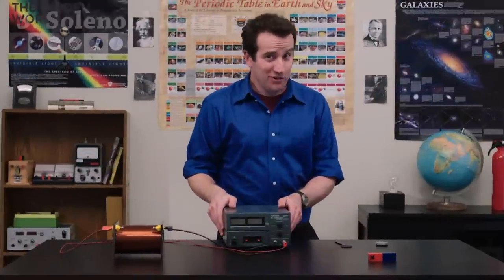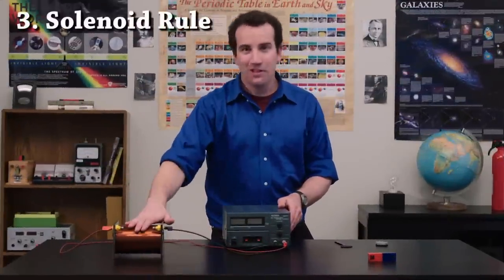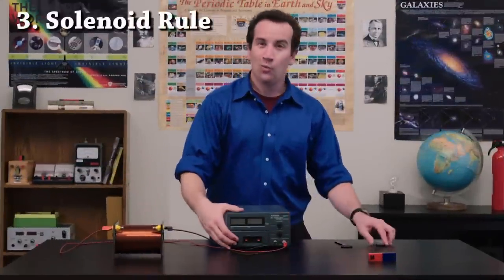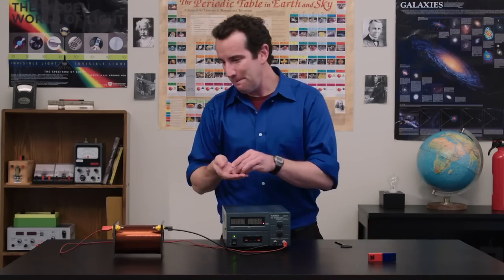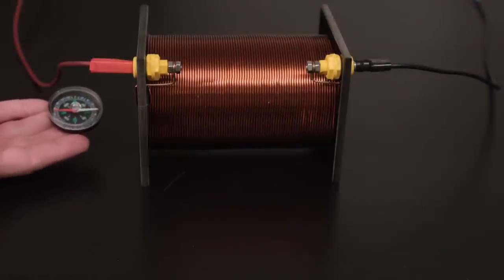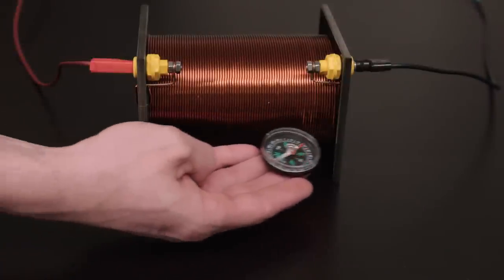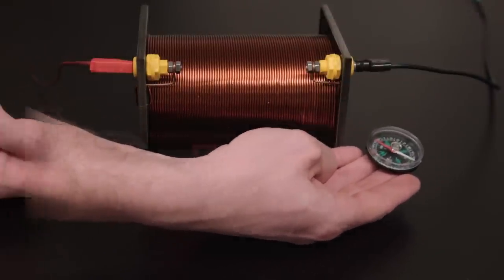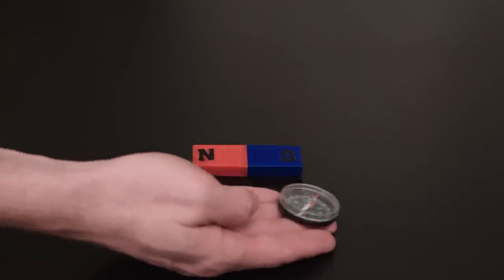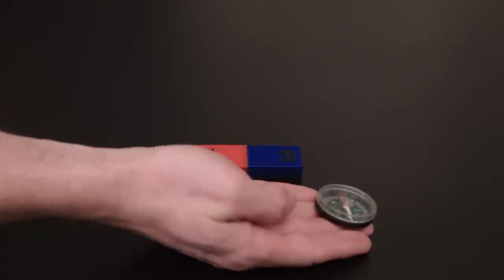And that brings us to our third right-hand rule, the solenoid rule. Watch this. This air-core solenoid can act just like a bar magnet, repelling north and attracting south.